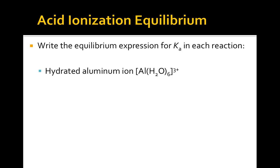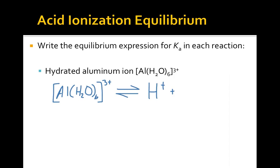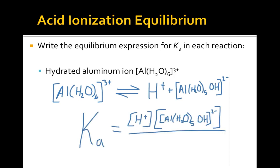Here's another unfamiliar acid, the hydrated aluminum ion. How do we write this dissociation reaction and equilibrium expression? Recall that water can act as a Bronsted-Lowry acid or base. Here, it's going to act as the acid and donate a proton. The hydrated aluminum ion dissociates into hydrogen ion and a complex that has five water molecules and one hydroxide, forming a positive two cation. The equilibrium expression can be written as such using the law of mass action.